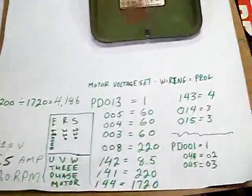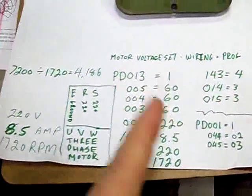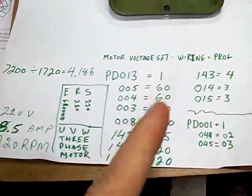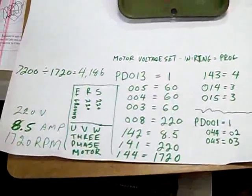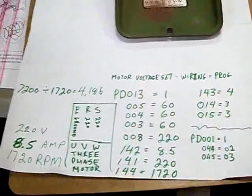These are the parameters. 13 you want to start off with, basically restores the factory defaults. 05, that's 60Hz for your max frequency. You can set faster, it'll rev the motor quicker.